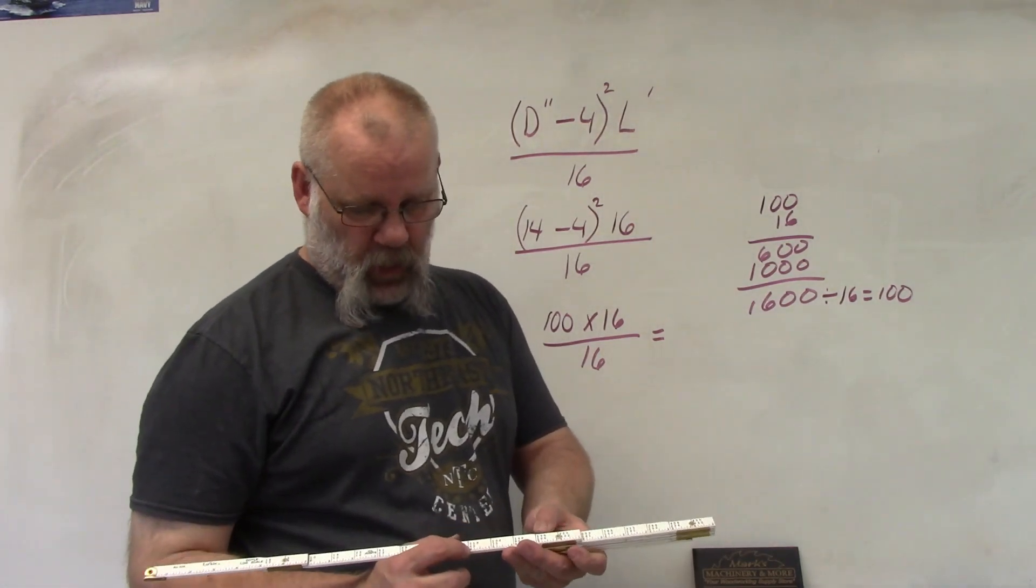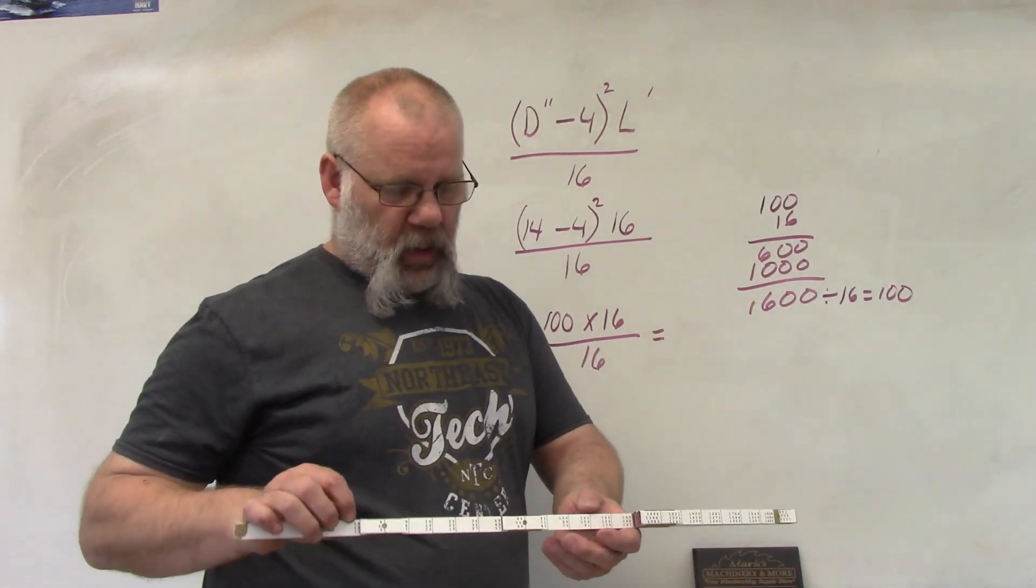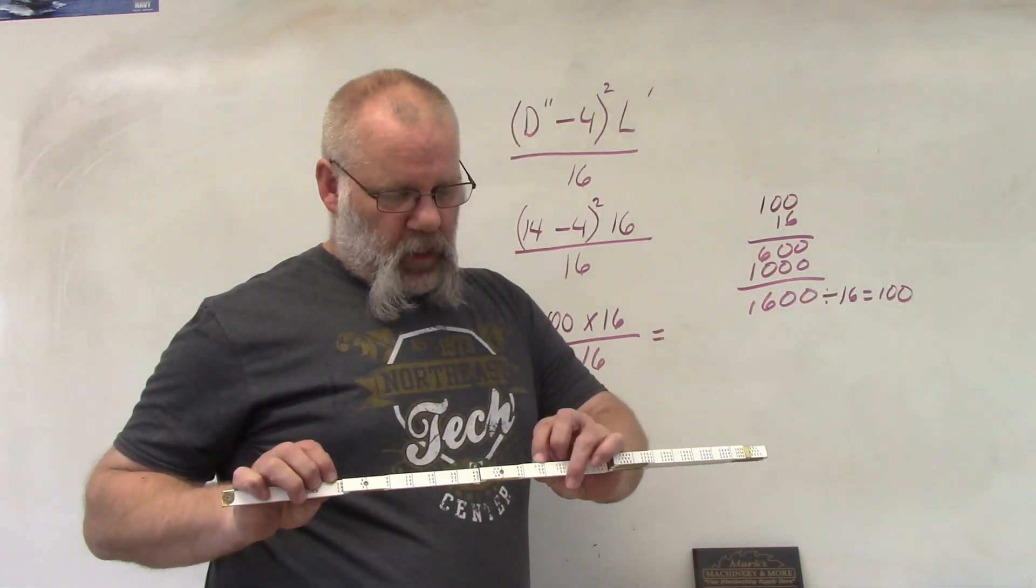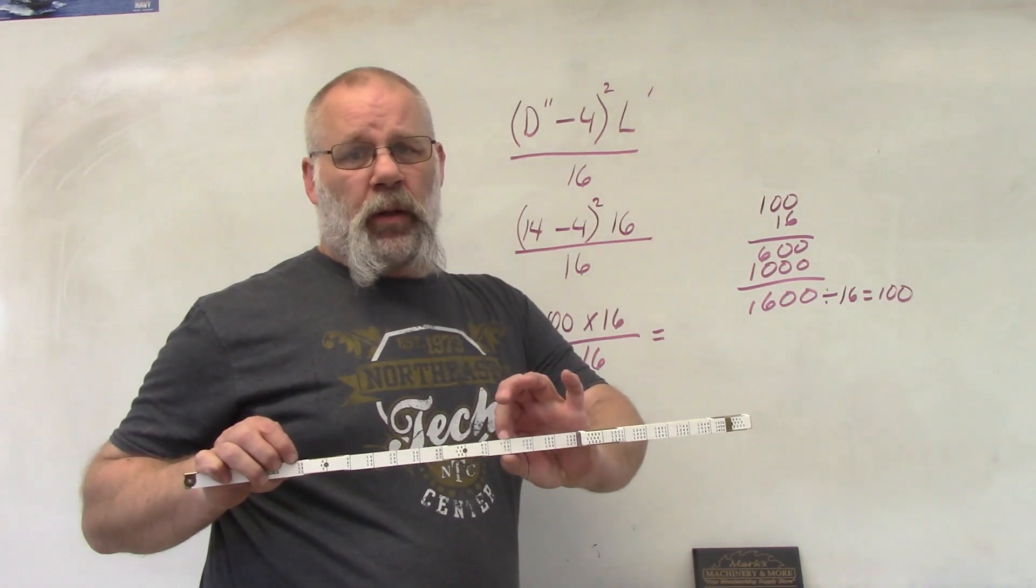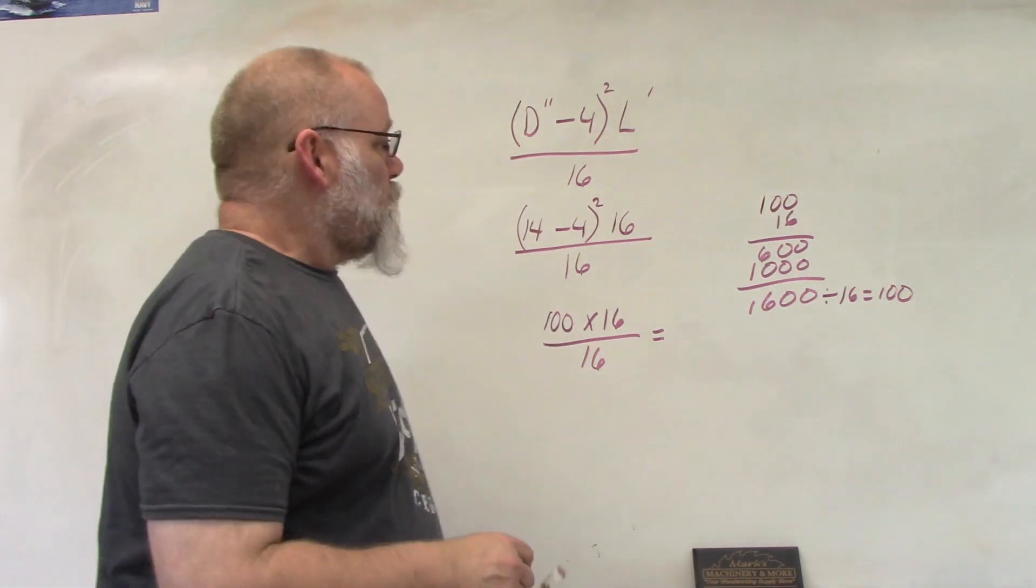...the number is 100 board feet. This equation takes into consideration that they subtract 2 inches off each side of the diameter where the sapwood is.